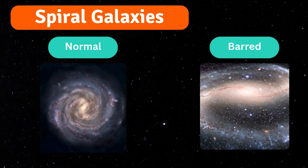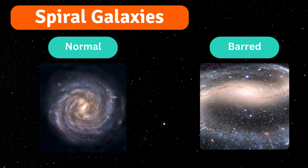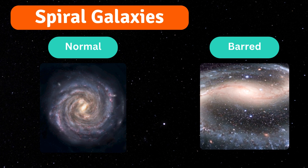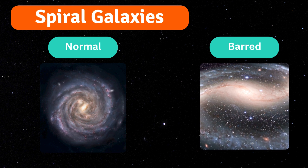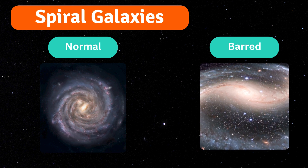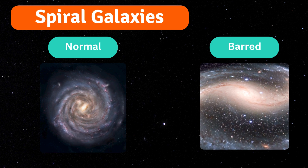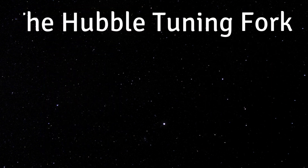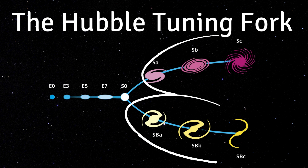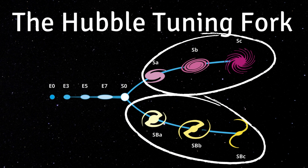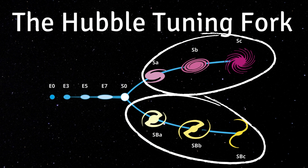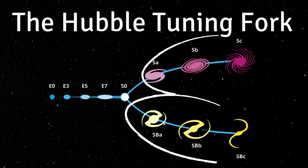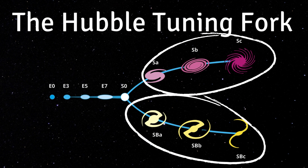There are two types of spiral galaxies. Normal spirals have arms that extend directly from the bright centre. Barred spirals have a bar-shaped structure that stretches across the centre. On the Hubble Tuning Fork Diagram, the diagram branches into these two types — normal spirals on the top branch and barred spirals on the bottom.